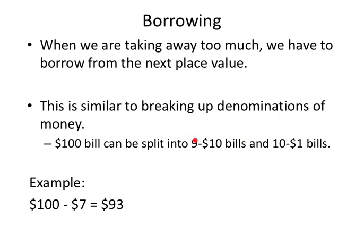I would say, okay, you'd have 9, $10 bills, and then maybe 10, $1 bills, right? That still totals 100, but now I'm going to take away 7 from those 10 ones, and that would end up with 93 bucks. So, you have the 9, $10 bills, and then the 3, $1 bills right there. That's borrowing.